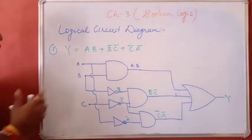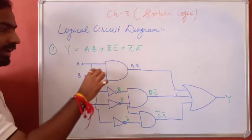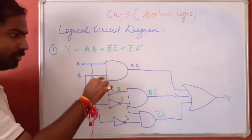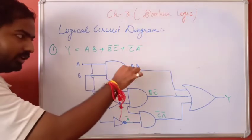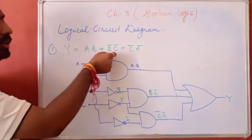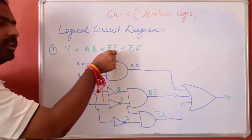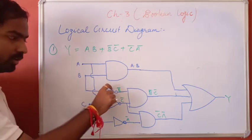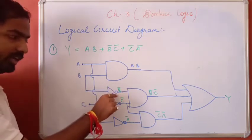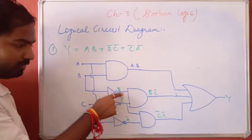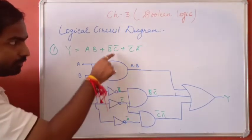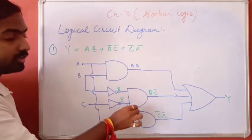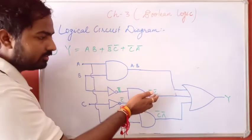Again, understand what happened here. In between A and B, AND operation is there — this is the A input, this is the B input, and A·B gives AND operation. Now again, in between B̄ and C̄: the B signal first has a NOT gate applied, giving B̄. Then in C, we also apply a NOT gate, giving C̄. Then an AND gate gives B̄·C̄.